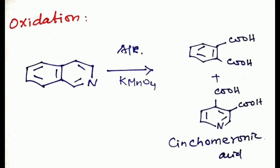Then oxidation reaction. Isoquinoline on oxidation with alkaline potassium permanganate forms phthalic acid and cinchomeronic acid.